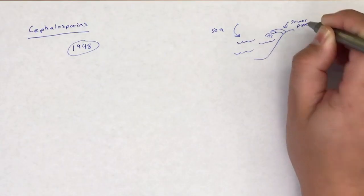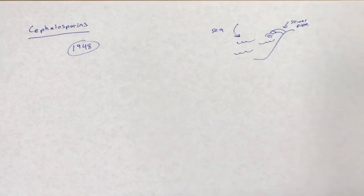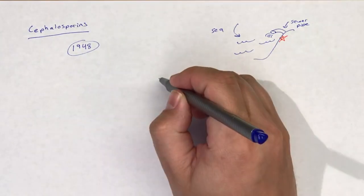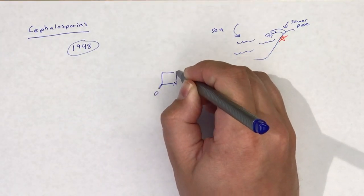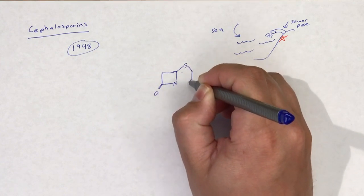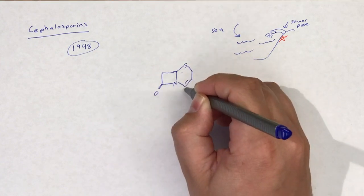Crude filtrates were found to inhibit the growth of Staphylococcus aureus. Cephalosporins all share a similar structure consisting of the base structure shown here. The base structure, named 7-aminocephalosporic acid, shares great structural similarity to the base structure of penicillin.